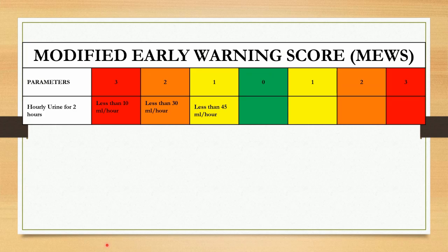The last parameter is hourly urine output. Monitoring of urine output is important in many clinical settings; however, formal estimation is not always available at first assessment. It is included in the MEWS chart to highlight the importance of recording urine output when clinically appropriate. Normal urine output is 0.5 to 1.5 ml per kg per hour. If it is less than 45 ml per hour, give a score of 1; less than 30 ml per hour, give a score of 2; less than 10 ml per hour, give a score of 3.